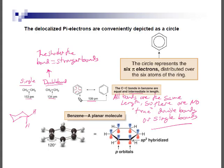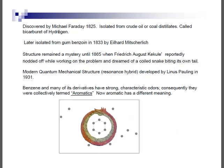Michael Faraday, one of the greatest experimental chemists ever — though he lacked formal mathematical training — is credited with first isolating benzene in 1825. Forty years later, Auguste Kekulé reportedly had a dream of a snake eating its tail, which inspired him to propose the structure of benzene. It wasn't until 1931 that Linus Pauling, also responsible for hybrid orbital theory, came up with the modern quantum mechanical model for benzene.